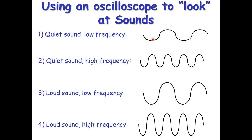Sound waves can be viewed on an oscilloscope, which displays them as a transverse wave. Two features: amplitude (height of wave) and frequency (how many waves per unit time). A small amplitude means a quiet sound; few waves means low frequency. The second example has the same amplitude but twice as many waves — double the frequency. Increasing amplitude gives a louder sound; increasing amplitude and frequency together gives a loud, high-pitched sound.